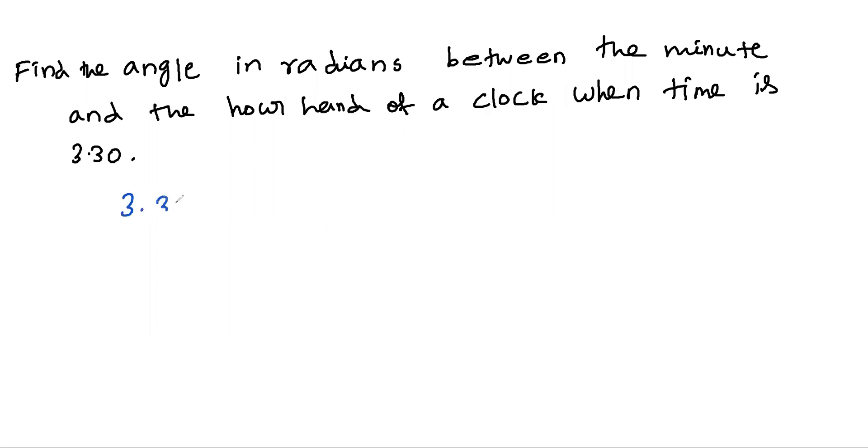3:30 means nothing but 3 hours 30 minutes. That can be written as 3 and a half hours. If you make this mixed fraction into a proper fraction, you will get 7 by 2 hours.